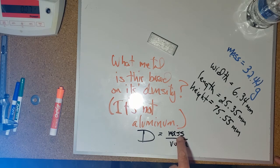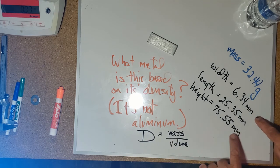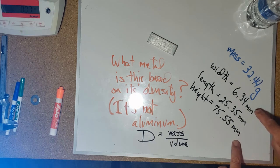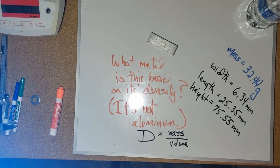Now, typically, mass is given in grams, so we're good there. The volume is typically in cubic centimeters, so you're going to have to convert your millimeters to centimeters and then multiply them to get the correct volume units.